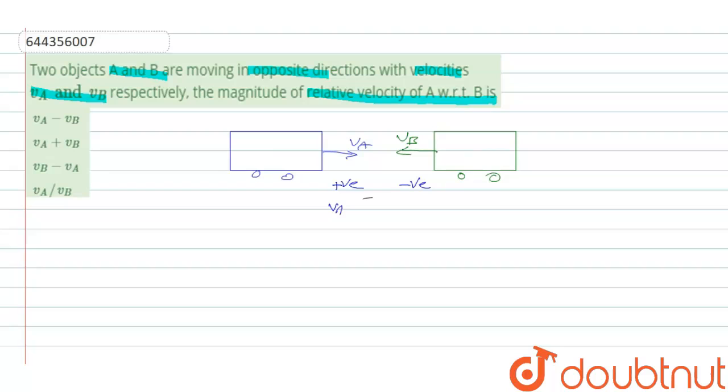So VA, I can write VA only, but VB I can write here minus VB because of the negative direction.